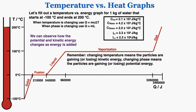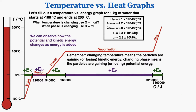We can also observe how potential and kinetic energy change as energy is added. Changing temperature means the particles are gaining or losing kinetic energy, while changing phase means the particles are gaining or losing potential energy. In every section where the water is gaining temperature, kinetic energy is being added; wherever it's changing phase, potential energy is being added. The energy in each gap goes into either kinetic or potential energy in the particles of the material.